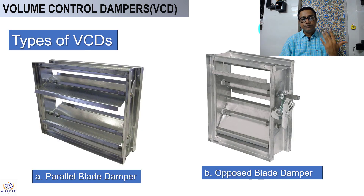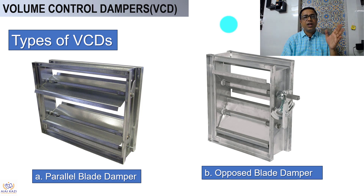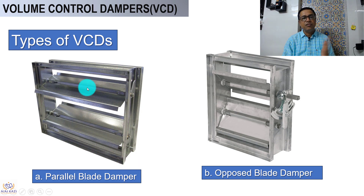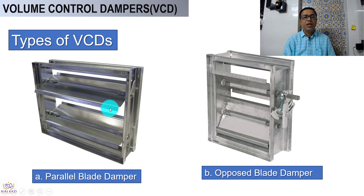Now let us look at the types of VCDs. The first type is called a parallel blade damper. You can see from the actual images that the blades open in parallel, allowing air movement. When the blades are closed, they close in one direction.